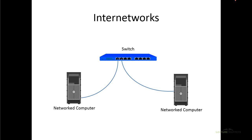If you remember, multiple computers can be connected together and can share data back and forth between each other using a device called a switch, and those Ethernet cables allow data to be sent from one computer to another. They communicated using an address called a MAC address, which uniquely identified every computer on our local area network, and the switch could read that information and send it to the appropriate computer.